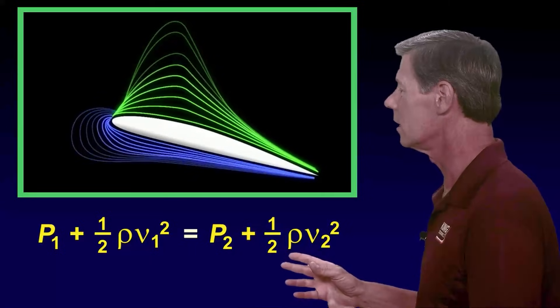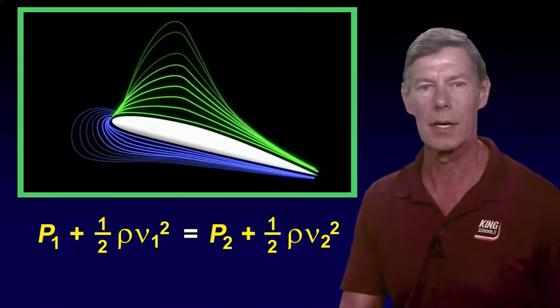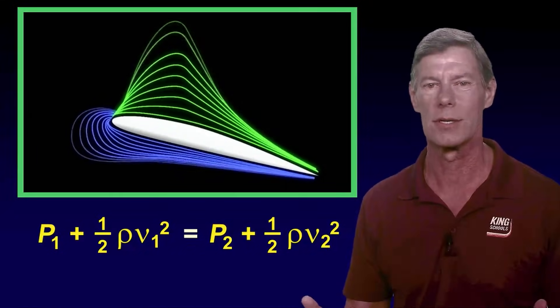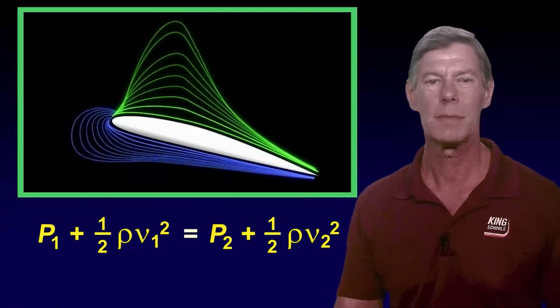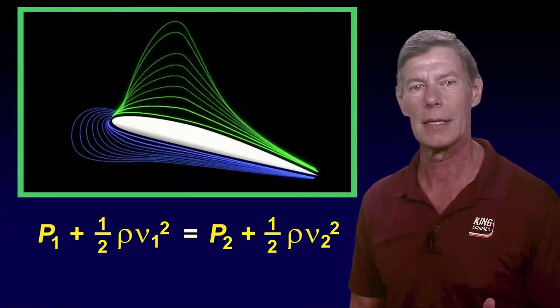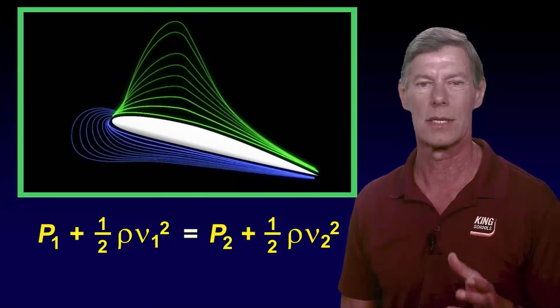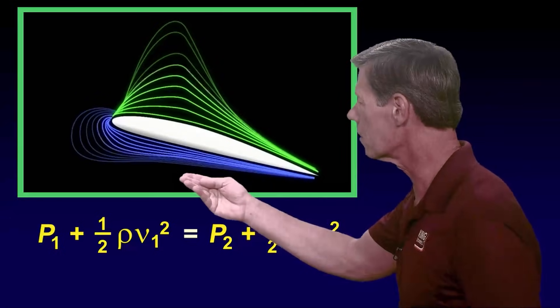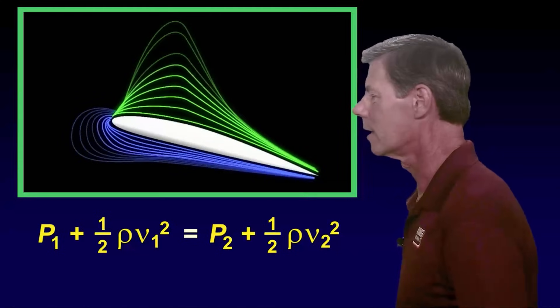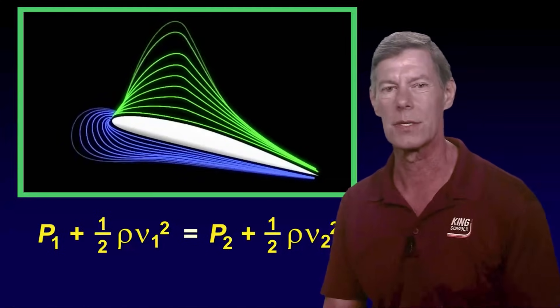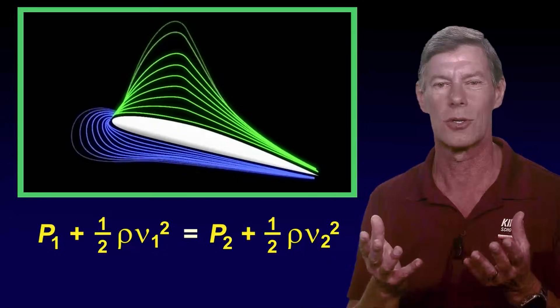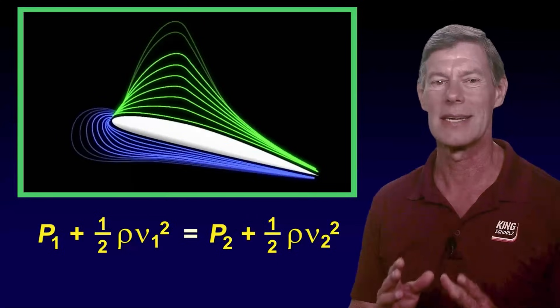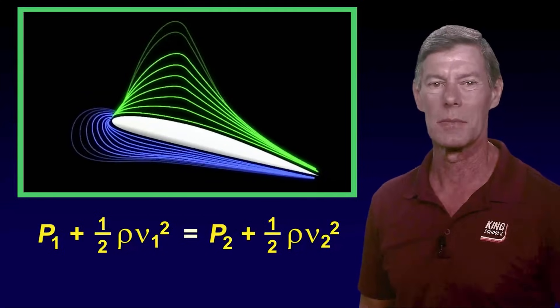But the important thing that you need to know is that it states if one part of the fluid's energy increases, like speed, another part, like pressure, must decrease to keep the total energy the same. For us pilots who aren't scientists, this simply means that the air above the wing forms a low pressure zone, while the slower air below the wing is at a higher pressure. It's this pressure difference that produces an upward force that contributes to lift. That's part of the story, but it still isn't the entire reason for lift.